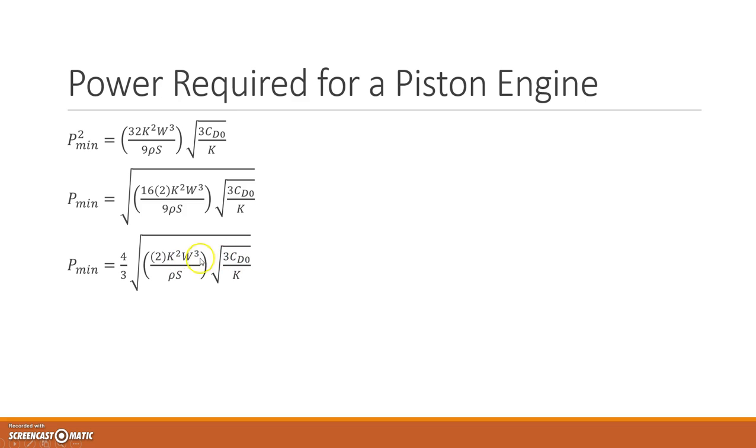So that would be the square root of K to the power of 4. So I can visualize K to the power of 4 here, divided by K would give me K cubed. So that's my expression. So the minimum power required for a piston engine is that formula there.